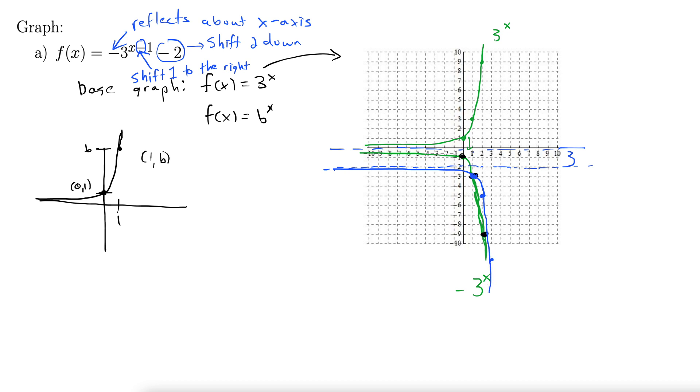So we flipped it. We moved it 1 to the right and 2 units down. And so the blue one's our new graph. So let's just label that. This here is negative 3 to the x minus 1 minus 2. Let's try another one.